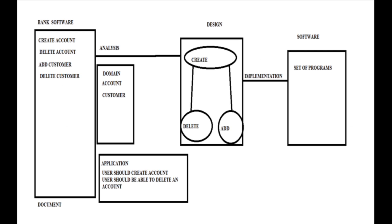Here is an example: assume I am developing bank software. My requirement document contains requirements such as create account, delete account, add customer, and delete customer. In the first step — system conception — I collect the requirements. In the second step — analysis — I have two models: domain model and application model. The domain model contains real-world objects related to bank software: account and customer. The application model contains concepts related to the application — for example, a user should create an account, a user should be able to delete an account.